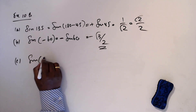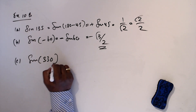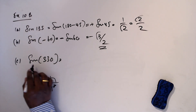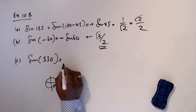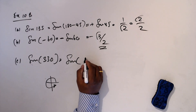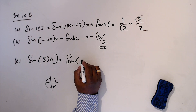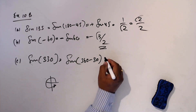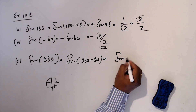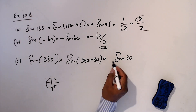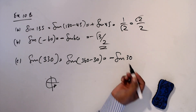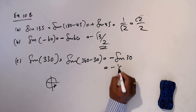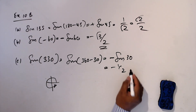C: sine 330. This is in the fourth quadrant, where sine is negative. I will write 360 minus 30, which is sine 30. Since it is in the fourth quadrant, the answer is minus. Sine 30 is one half, so the answer is minus one half.